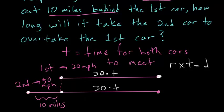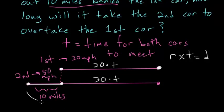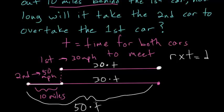And the total distance that the second car travels, since it's going 50 miles an hour, would just be 50 times t, the amount of time that it takes from its starting point to catching the first car.